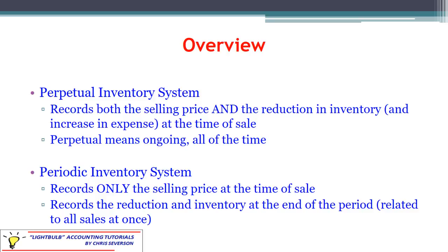When we talk about a perpetual inventory system, we're generally talking about a company that has a barcode scanner. As they sell a product, it gets scanned out and the computer keeps an updated record of what they have and what is now gone because they sold it. In a perfect world, a perpetual inventory system would give you an ongoing inventory — you'd know at any point in time how much of product A you had left, how much of product B you had left. Behind the scenes in your computerized accounting records, it's going to record the sale — the revenue — and also record the expense, the use of that inventory. We'll see the journal entries in just a bit.